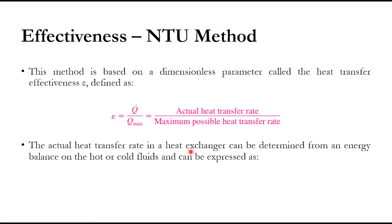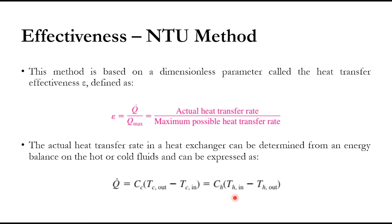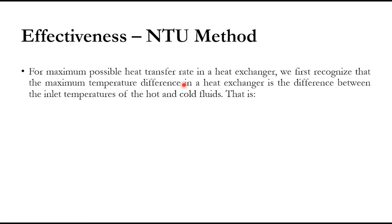The actual heat transfer rate is determined by q = m·c_p·ΔT, where m·c_p gives the heat capacity flow rate C. So q = C_c·(T_{c,out} − T_{c,in}) for the cold side, and q = C_h·(T_{h,in} − T_{h,out}) for the hot side. For the maximum possible heat transfer rate, we first recognize the maximum temperature difference in the heat exchanger: ΔT_max = T_{h,in} − T_{c,in}.